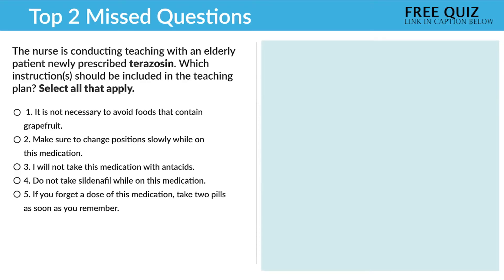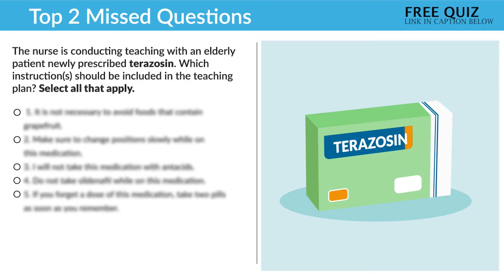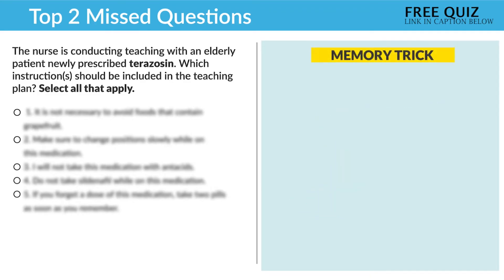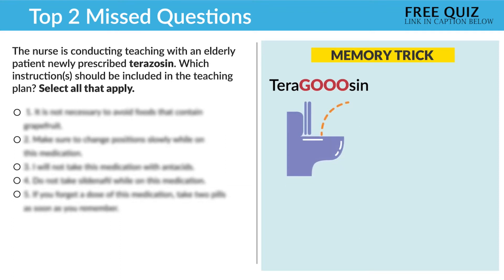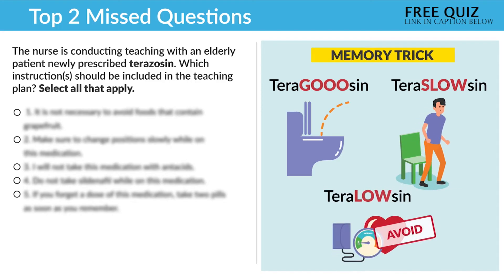This question is asking about terazosin — which instructions to include. Before you look at any of the options, always think of the first few things you know about the drug. The memory trick for terazosin: 'tera-go-sin' helps the client go pee; 'tera-slow-sin' means slow position changes due to orthostatic hypotension; and 'tera-lo-sin' means avoid blood pressure medications that can lower blood pressure further.